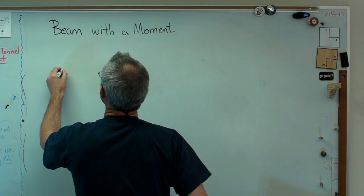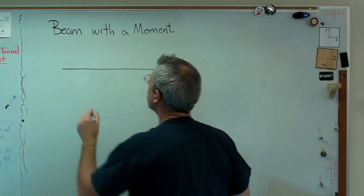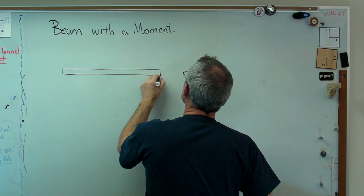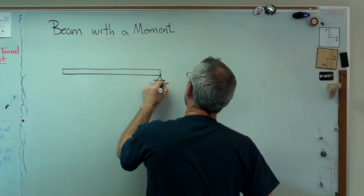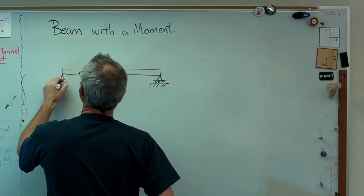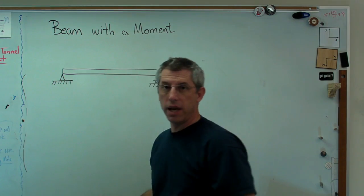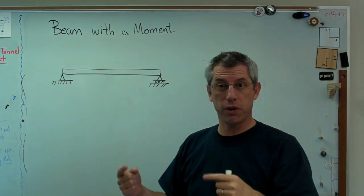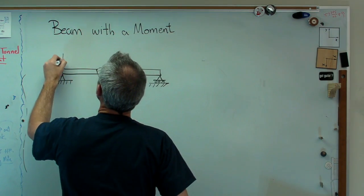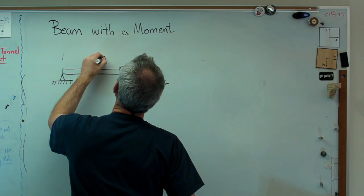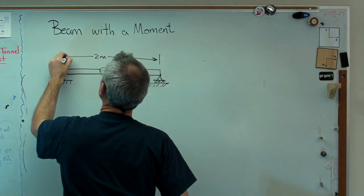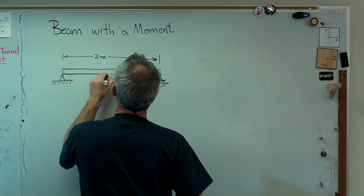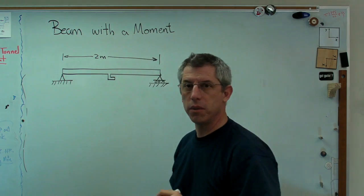Let's take a beam that's simply supported. I'm going to make this as simple as I can here. Let's put some pinned ends on it. Pinned ends means no vertical displacement at the ends, but we can have rotation at the ends. Let's make this two meters long, and right in the middle, let's put a little L-shaped bracket here.